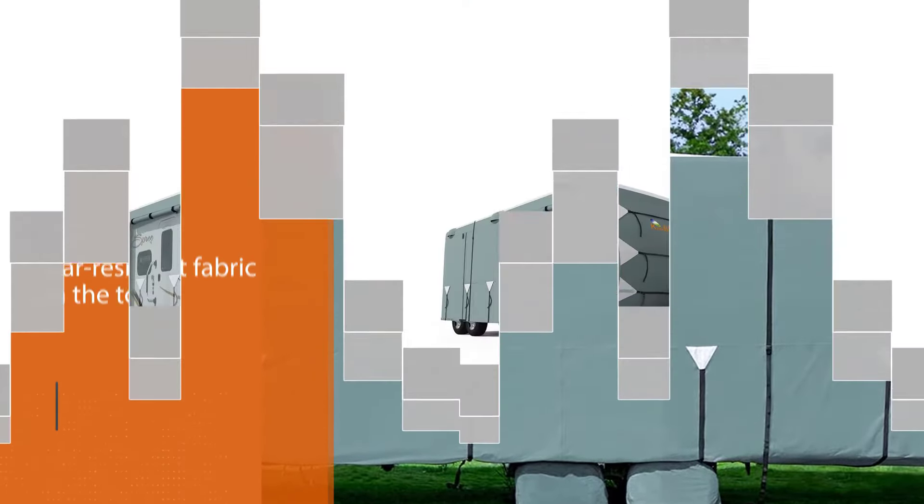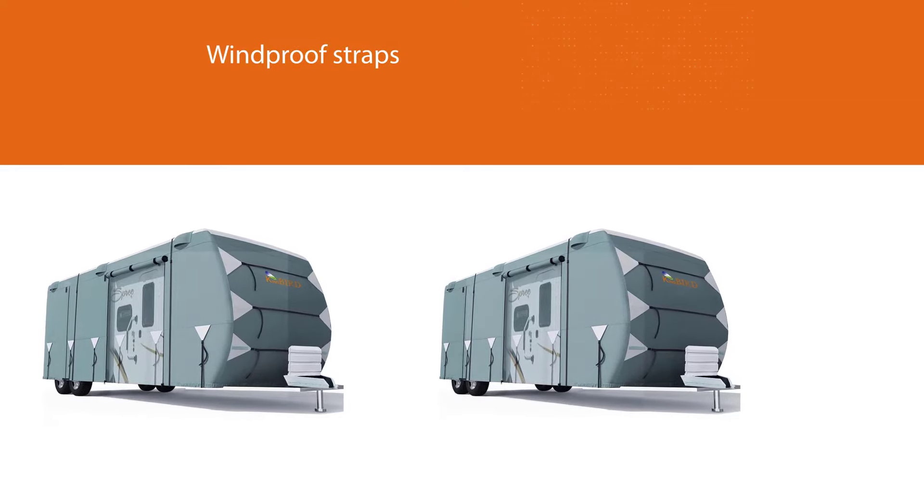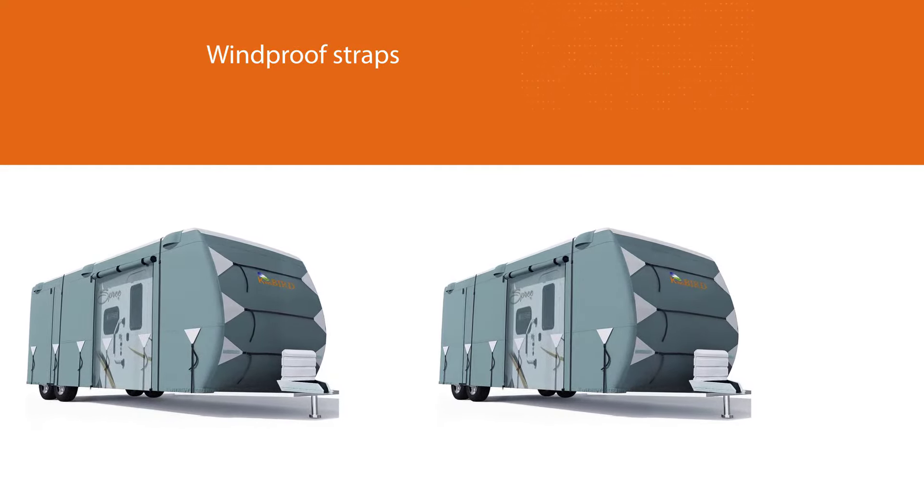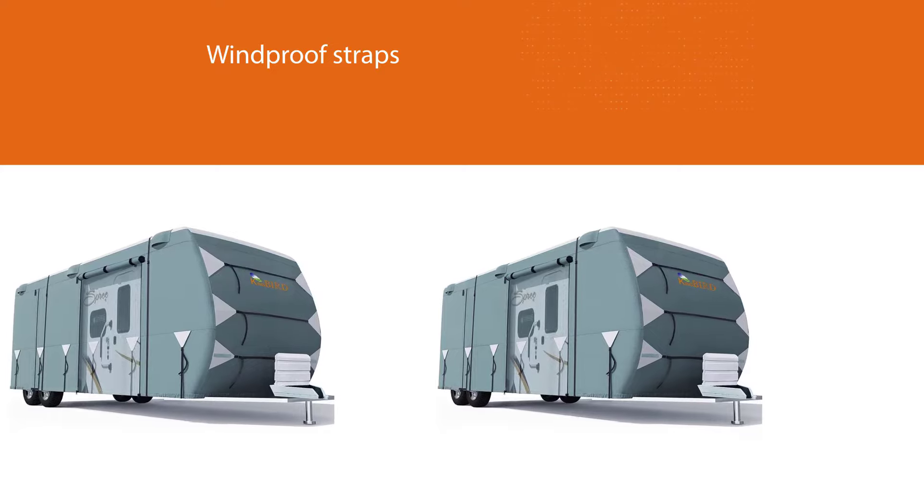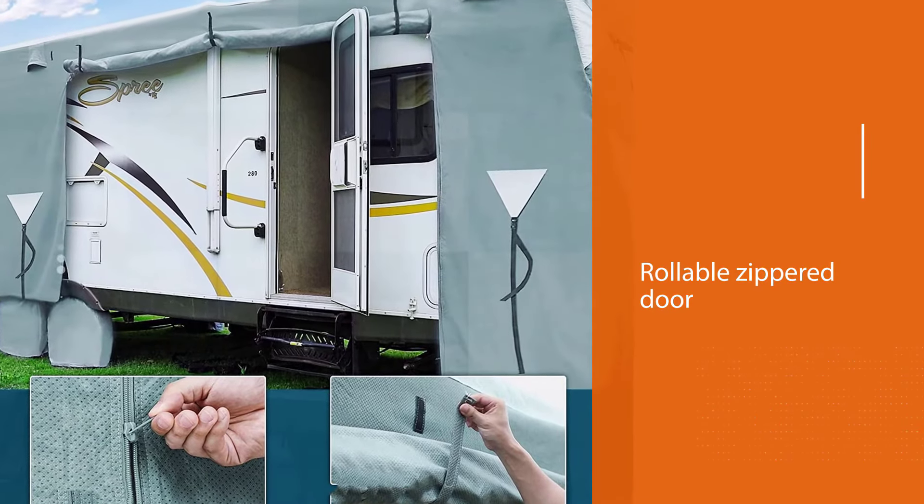The King Bird cover is made from UV-resistant fabric so it's less likely to deteriorate in harsh sunlight. Plus, it's got a full five layers of tear-resistant fabric on the top and three on the side.